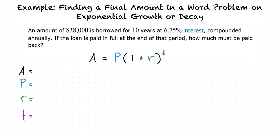In this problem, we don't know what a is, so we are solving for it. The principal amount, or starting amount, is $38,000.